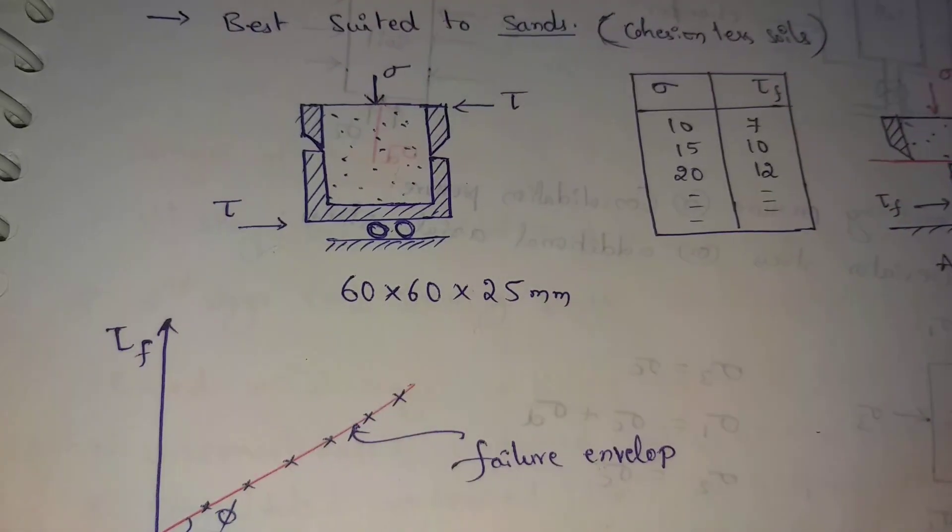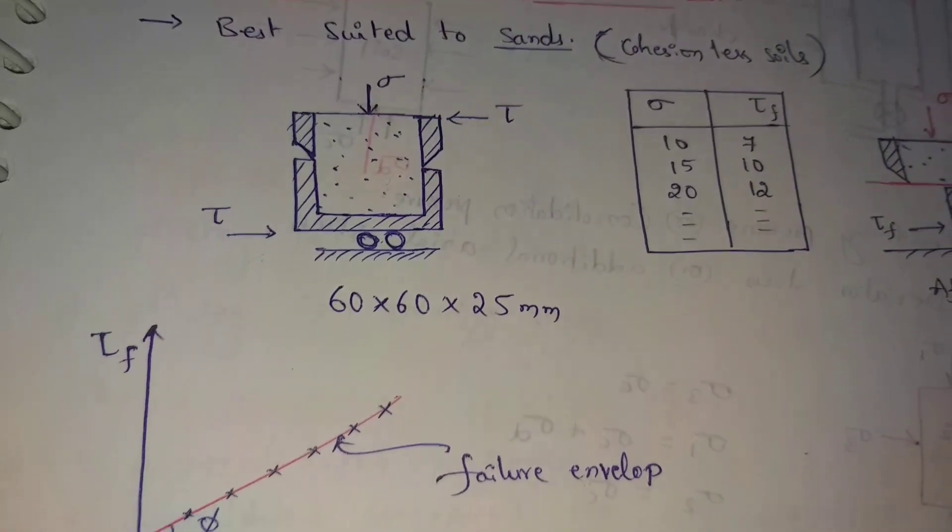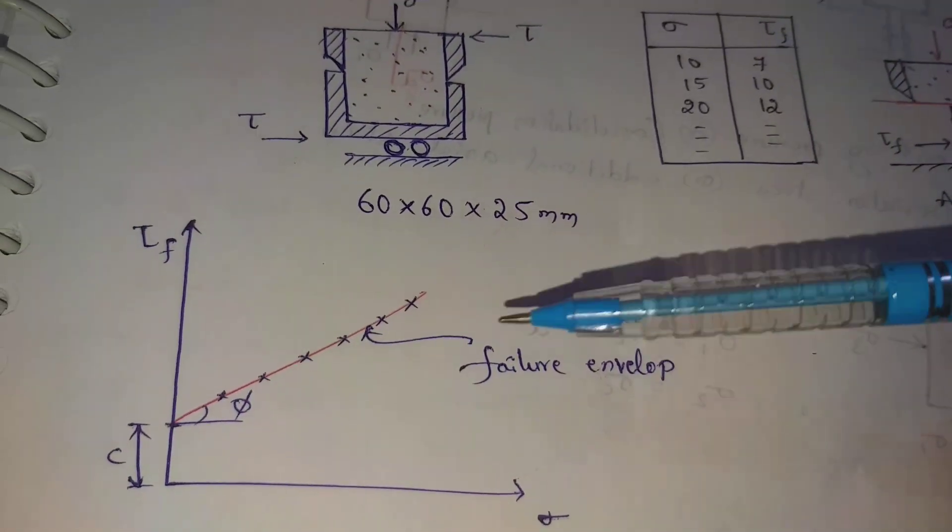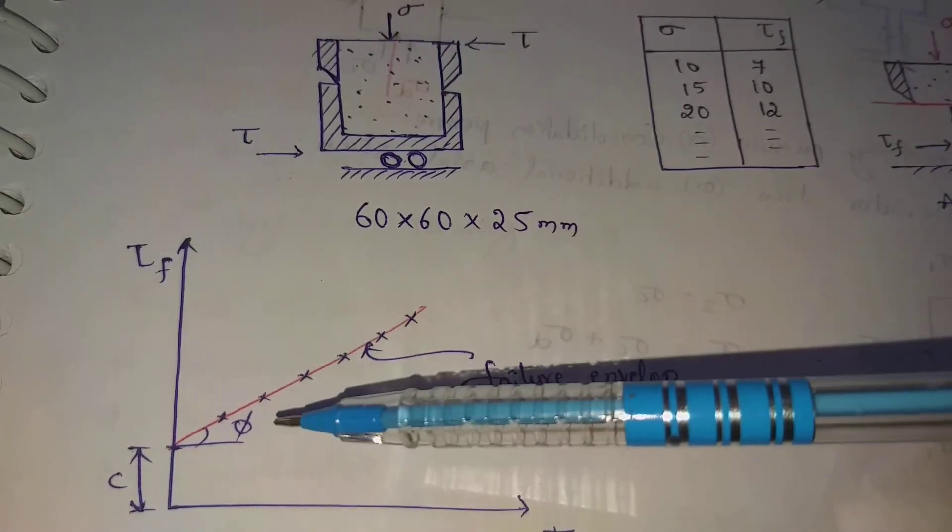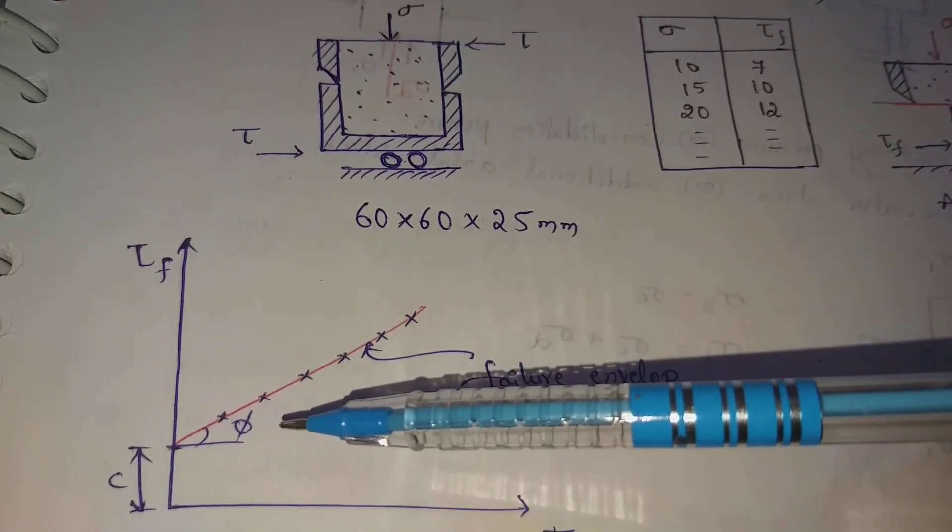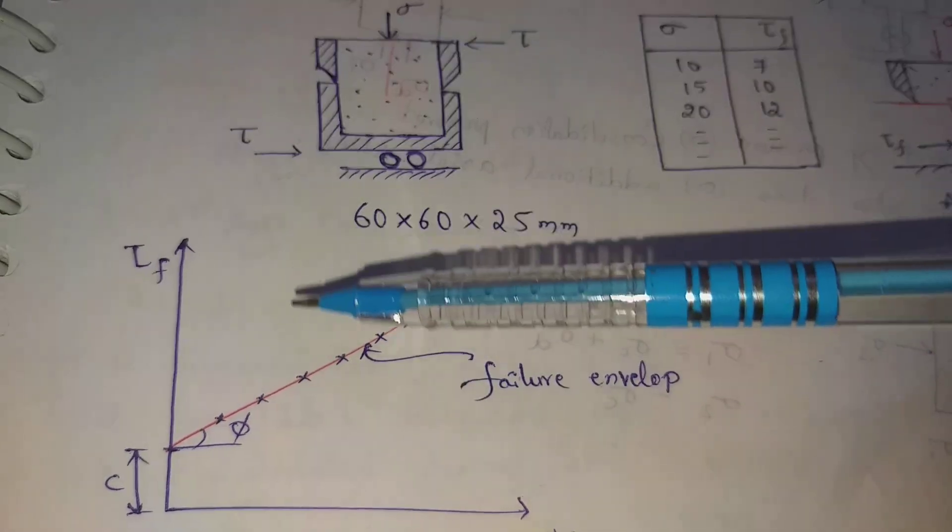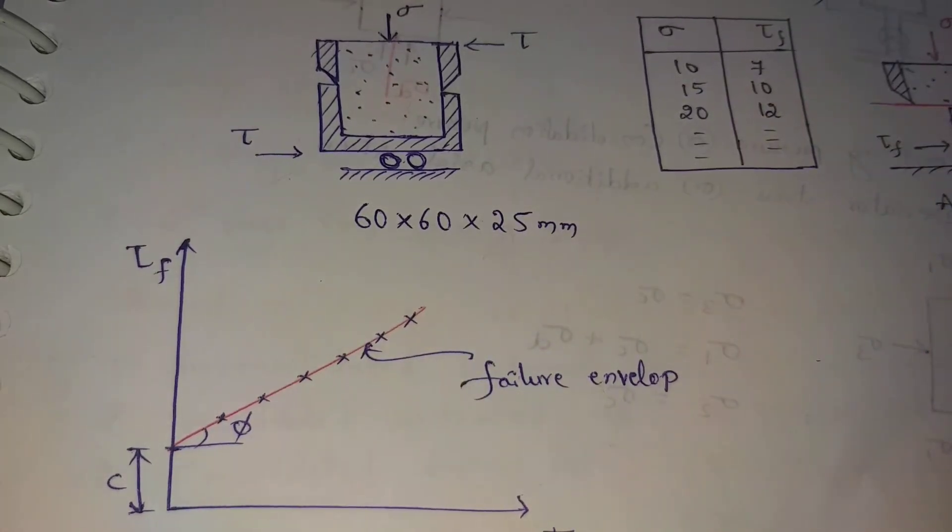We choose the values of the values and the graph is formed. This is c-phi soils, c means cohesion, phi means angle of shearing resistance. C-phi soils means clay is sand, clay is silt.